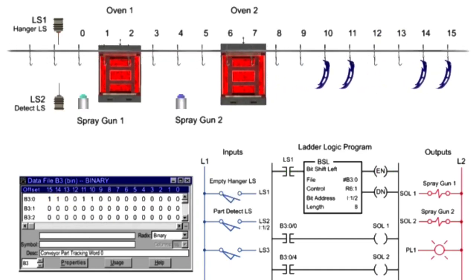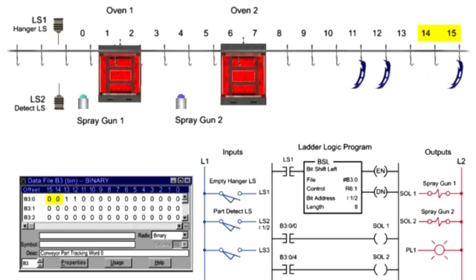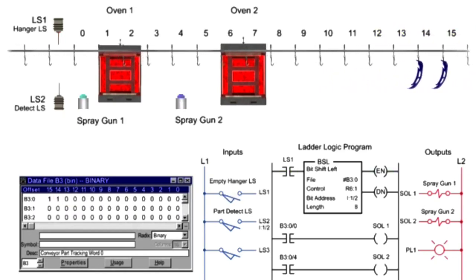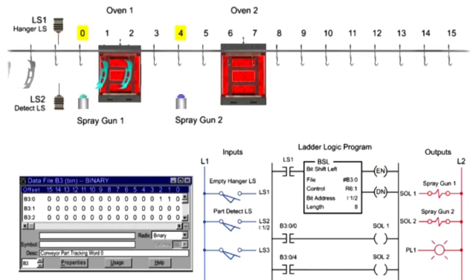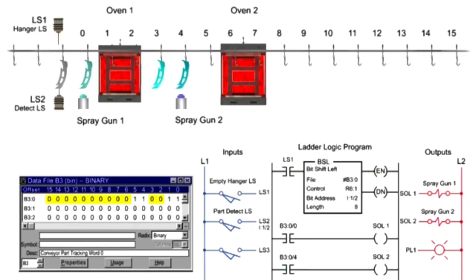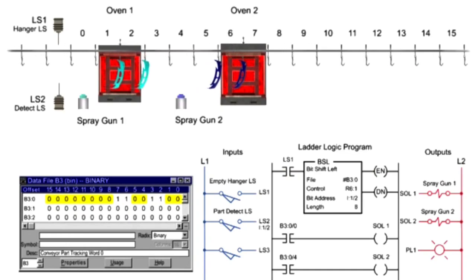Leaving two empty hooks, two logic 0s are shifted left. Repeating the sequence, parts are painted when logic 1s are shifted into the first and fourth bit of the word, and logic 0s allow empty hooks to pass without paint operations.